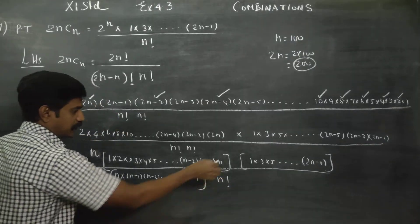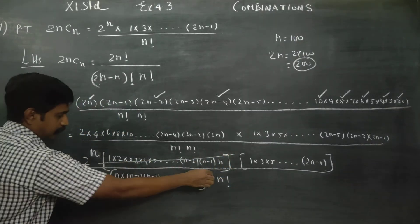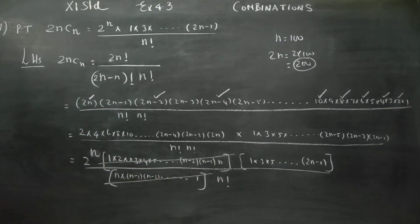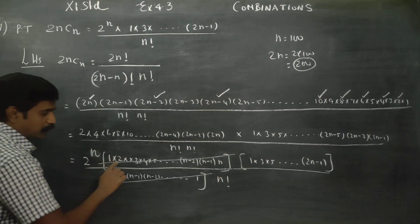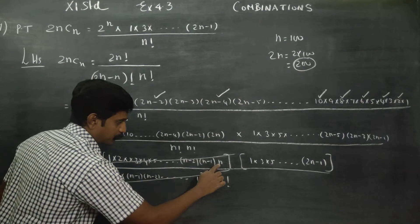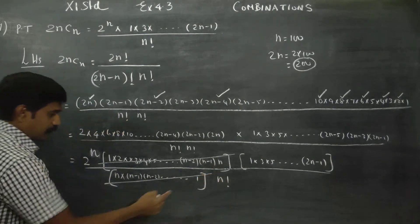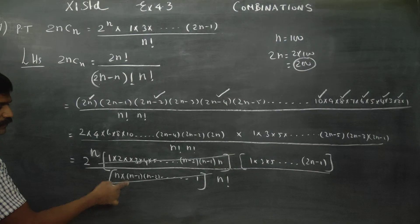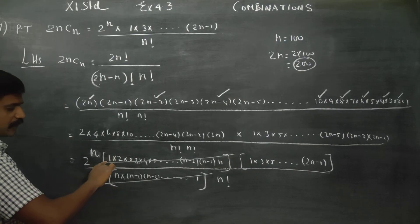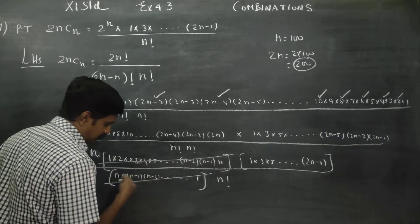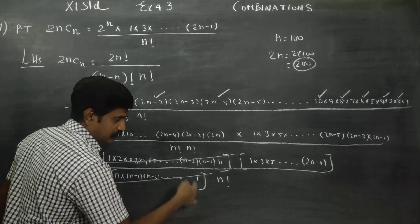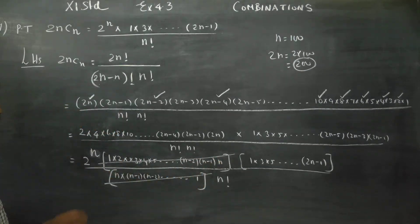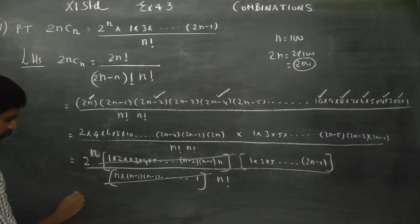You can see this bracket cancels — 1, 2, 3, up to n in ascending order and in descending order are the same, so they cancel. If you have the balance, you can see 2 power n remains.